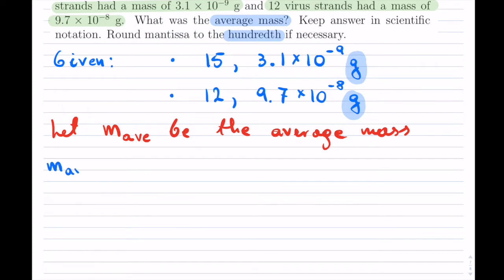Now let's write out our equation. We have 15 of these strands times 3.1 × 10^-9, so that's the total mass of these guys, plus we have 12 of these strands times 9.7 × 10^-8.